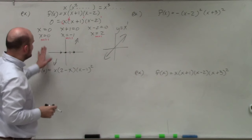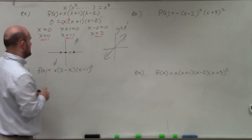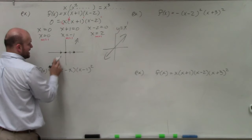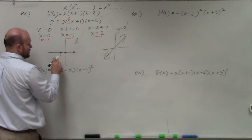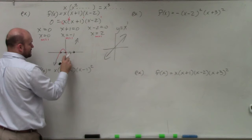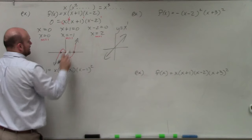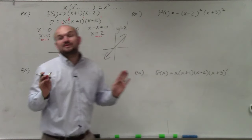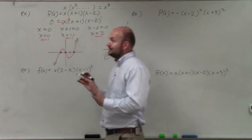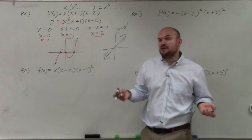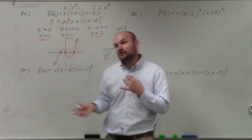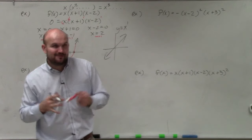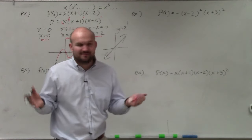All I need to do to graph this polynomial is connect my end behavior by going through my zeros, and my function looks something like that. We'd want to use graphing technology to get a precise picture, but this gives a rough example.